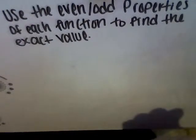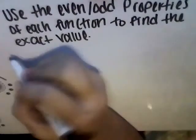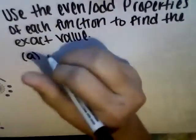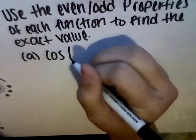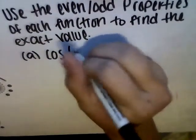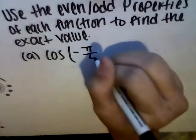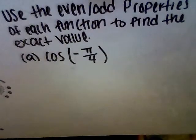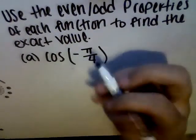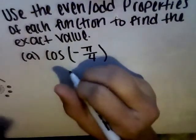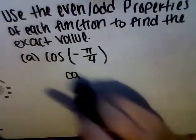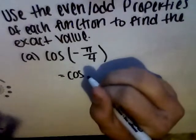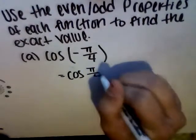An example would be cosine of negative pi over 4. This equals, because it's cosine, the negative cancels out. So it's going to be cosine equals cosine of pi over 4.